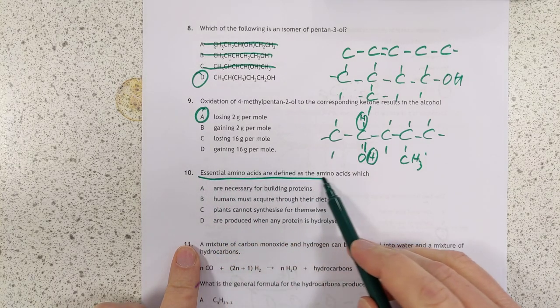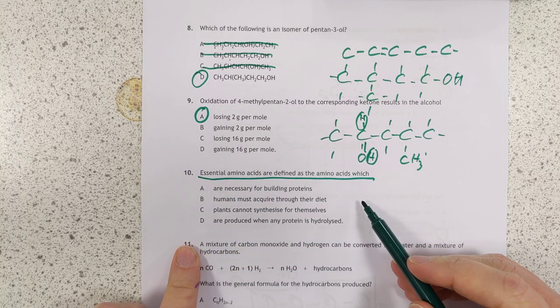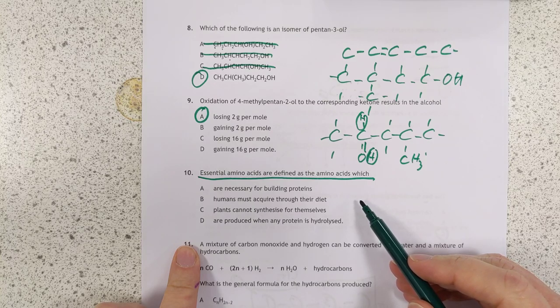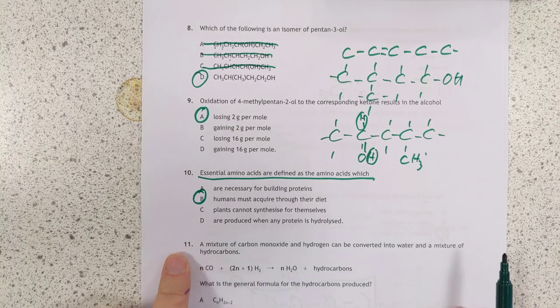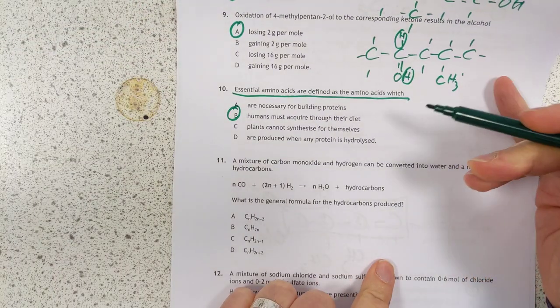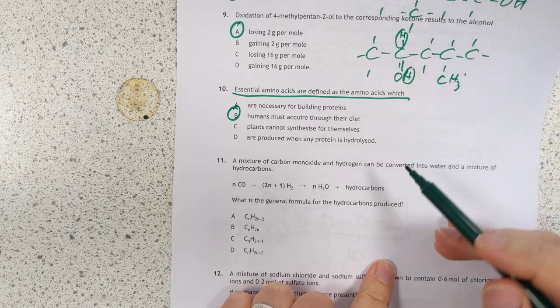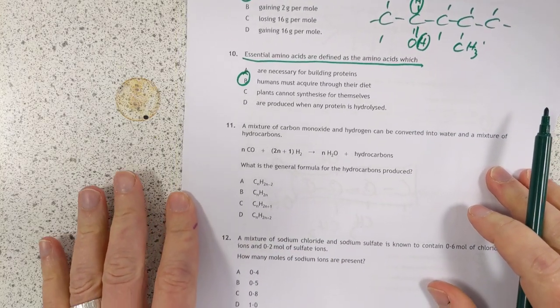Essential amino acids, very simple. That's the stuff you have to eat. Because you can't make them in your body, so humans must acquire through their diet. If it was my exam, I'd just come back and check that the rest are wrong, but I'm not going to burn your time doing that today.